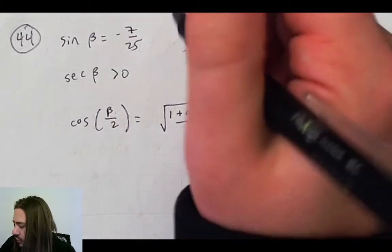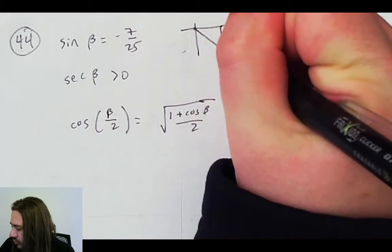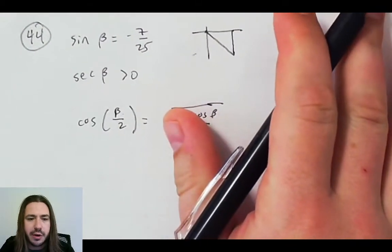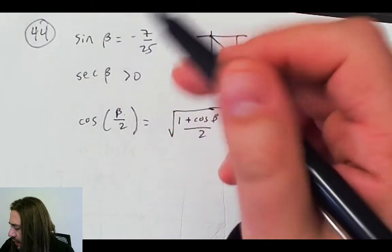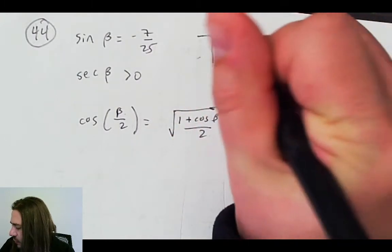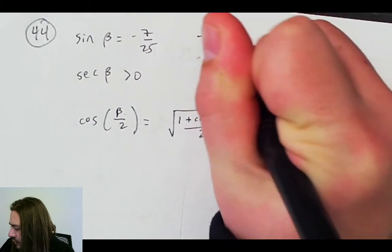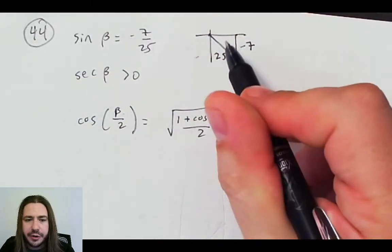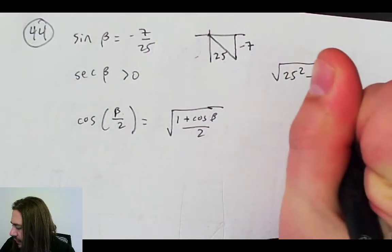So now we just need to figure out what cosine of beta is, and we can plug that in and pretty much be done. We're going to construct a little triangle like we did in some of the other problems in this section. And sine of beta is negative 7 over 25. So that's opposite over hypotenuse. I'm going to use the Pythagorean theorem here to find that other missing side, be the square root of 25 squared minus 7 squared.